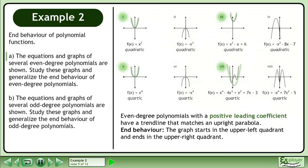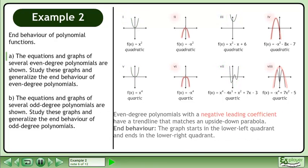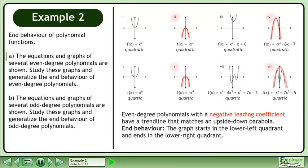Even degree polynomials with a positive leading coefficient have a trend line that matches an upright parabola. The end behavior is that the graph starts in the upper left quadrant and ends in the upper right quadrant. Even degree polynomials with a negative leading coefficient have a trend line that matches an upside down parabola. The end behavior is that the graph starts in the lower left quadrant and ends in the lower right quadrant.